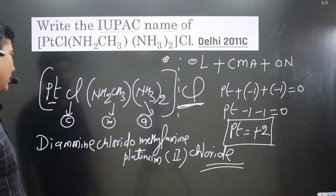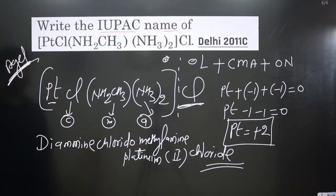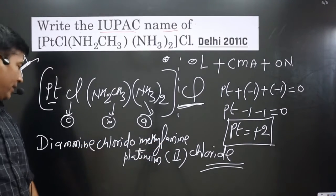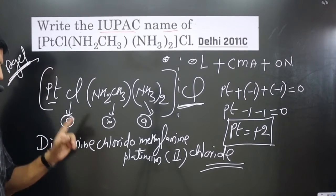The complete name is diamine chlorido methylamine platinum two chloride. If you like this video please share and subscribe to the channel.